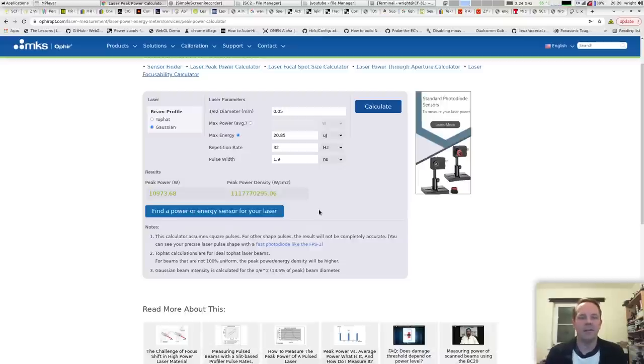So I'm on Ophir Optics website here and they have a handy little calculator that can calculate power density quite easily. Our beam diameter here I've set at 50 microns because that's going to be the diameter of the core that we're coupling into. This is all going to assume 100% coupling efficiency. The maximum energy is 20.85 microjoules which I've measured with the pyroelectric sensor and a pulse width of 1.9 nanoseconds which I've measured with the fast photodiode. And we can see that we're coming out with peak power once again of 11 kilowatts but check out the power density at the end of the fiber in watts per square centimeter.